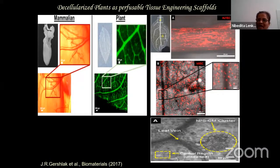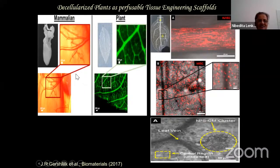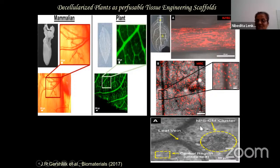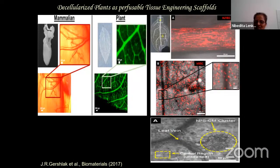An interesting cross-species approach: comparing mammalian organ architecture with plant structure. Gershlak and colleagues published in Biomaterials in 2017, showing similar vascular structures between mammalian organs and spinach leaves. They decellularized spinach leaves and incorporated cells - umbilical cord-derived endothelial cells and MSCs. After recellularization, they even incorporated cardiomyocytes derived from human pluripotent cells. The beating cardiomyocytes can be seen in their paper's video. This is how research requires critical and rational thinking - you can bring these thoughts and make them work.